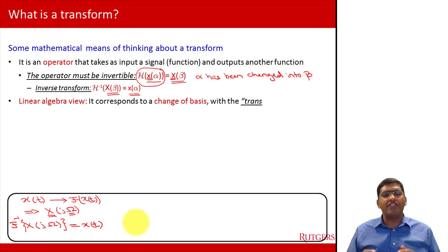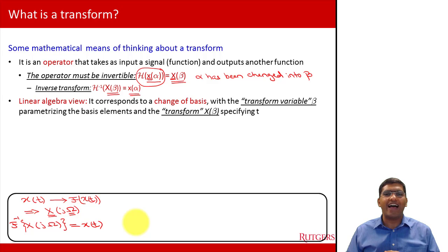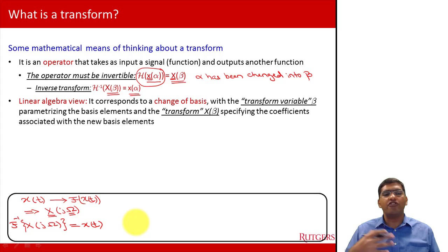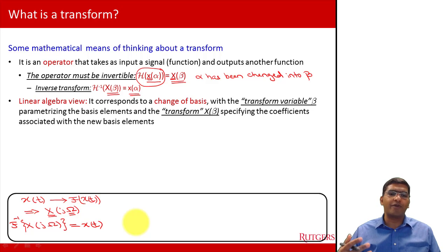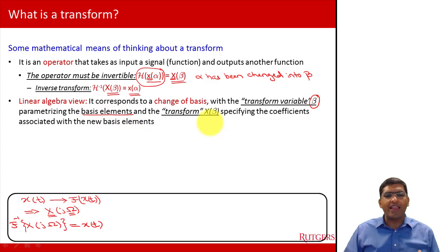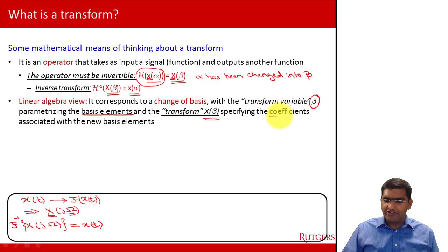There is also a linear algebra view of a transform, which says that a transform is nothing but a change of basis. Your original basis might be the canonical time domain basis, and what you are doing is changing basis to get to another domain — the idea being that things perhaps become easier in that other domain. In this terminology, the transform variable beta parameterizes the basis elements, and the transform X of beta specifies the coefficients associated with the new basis elements.